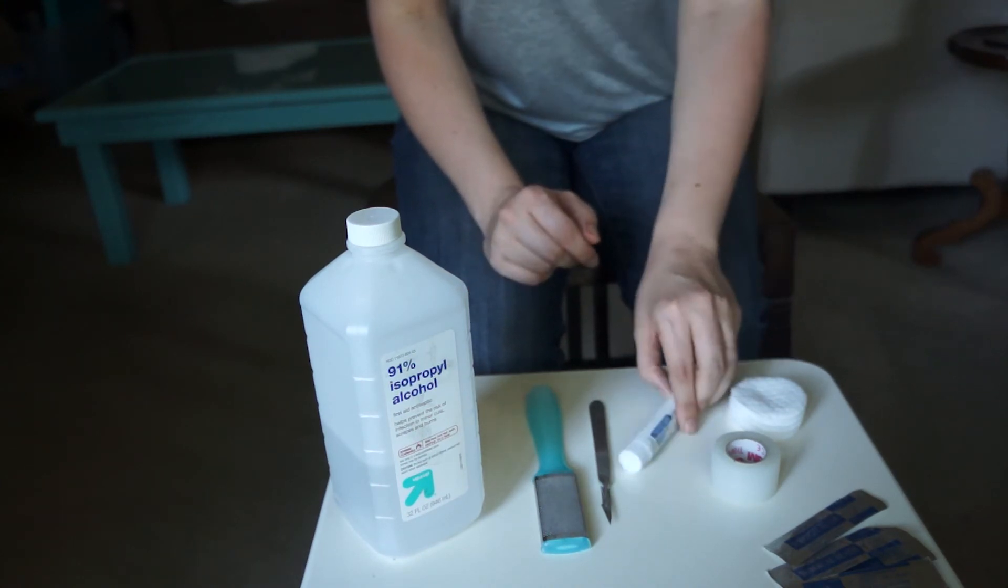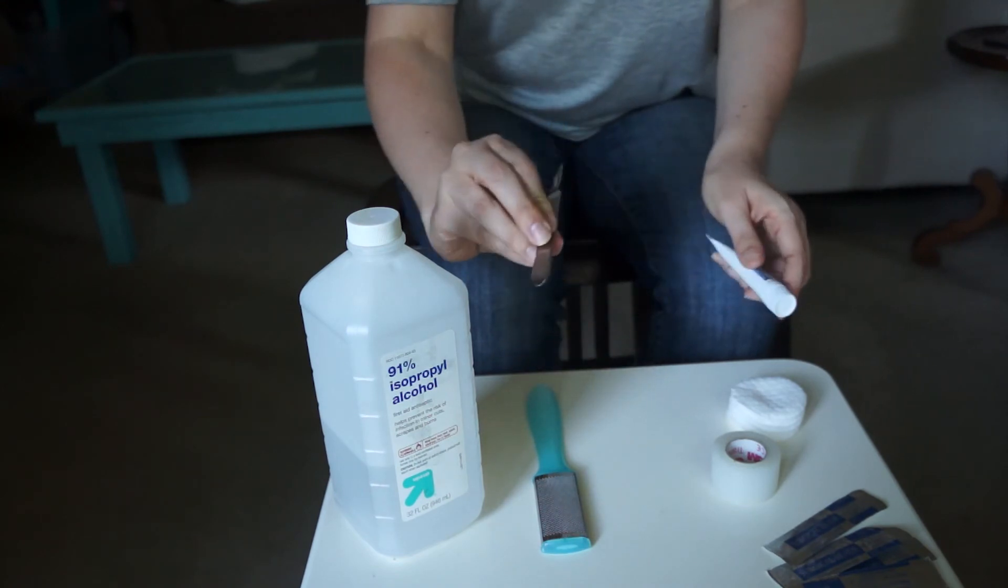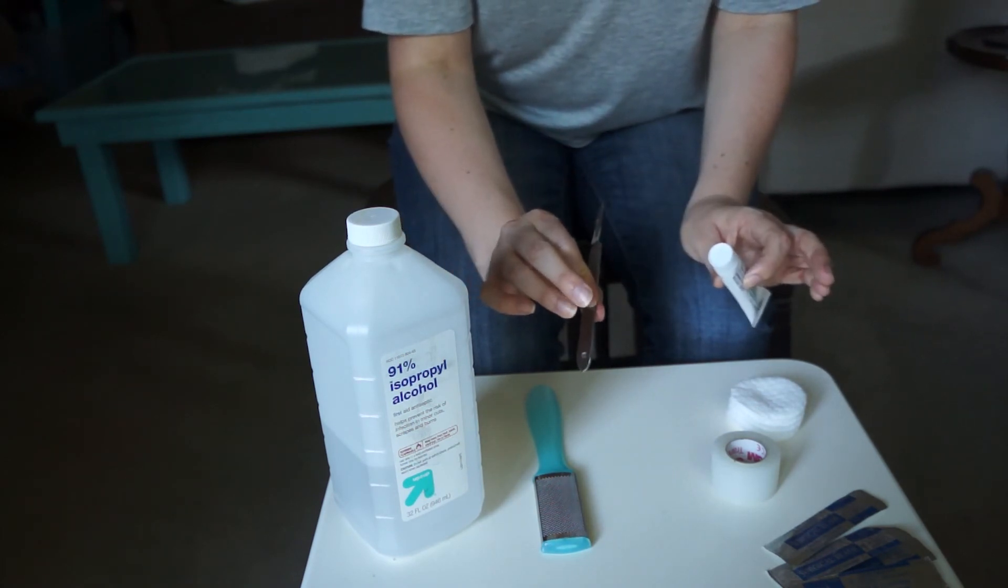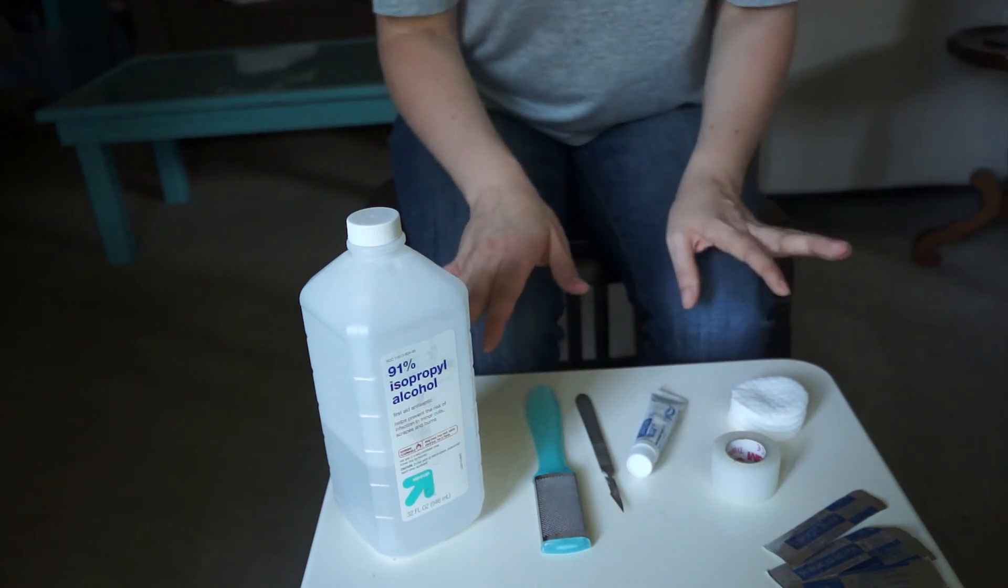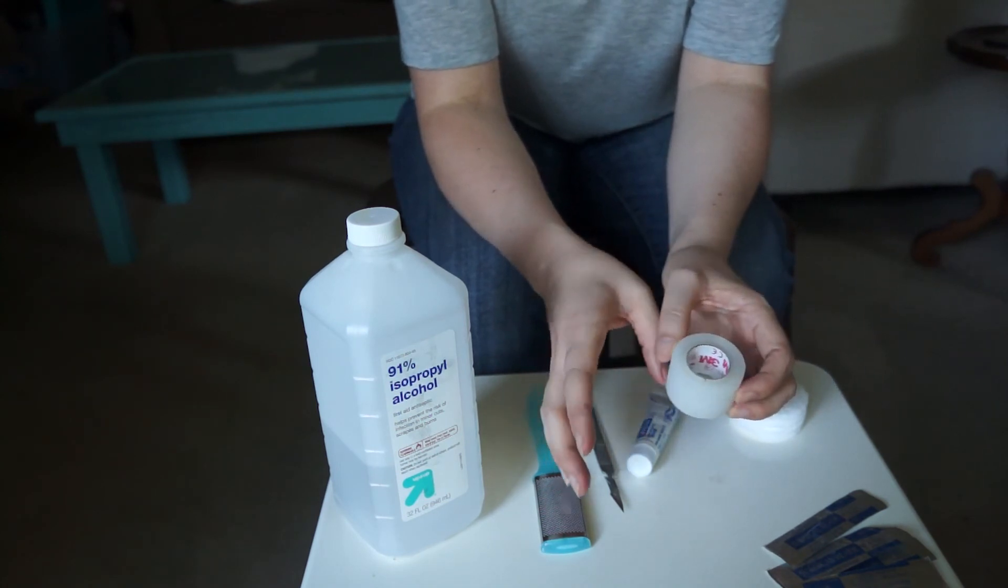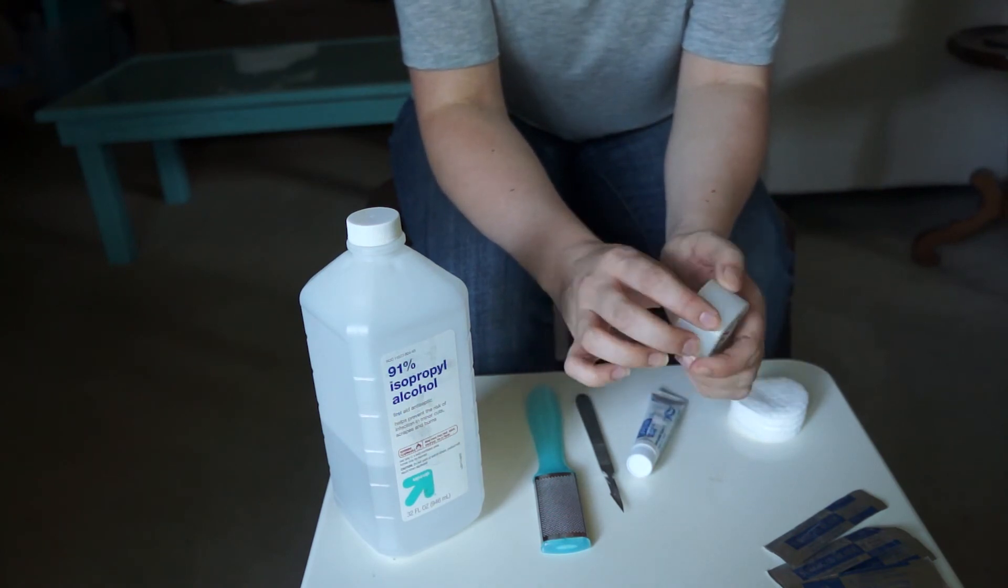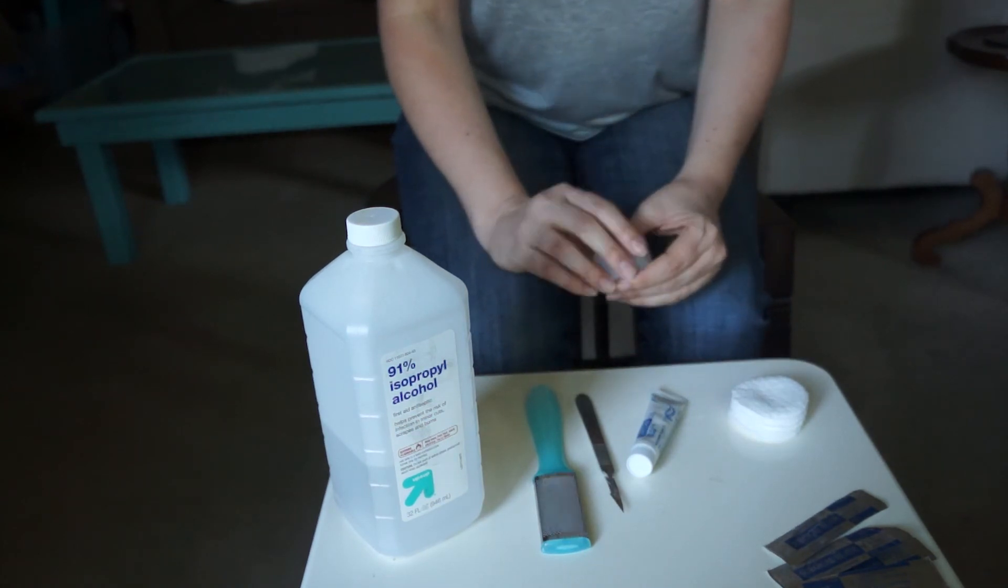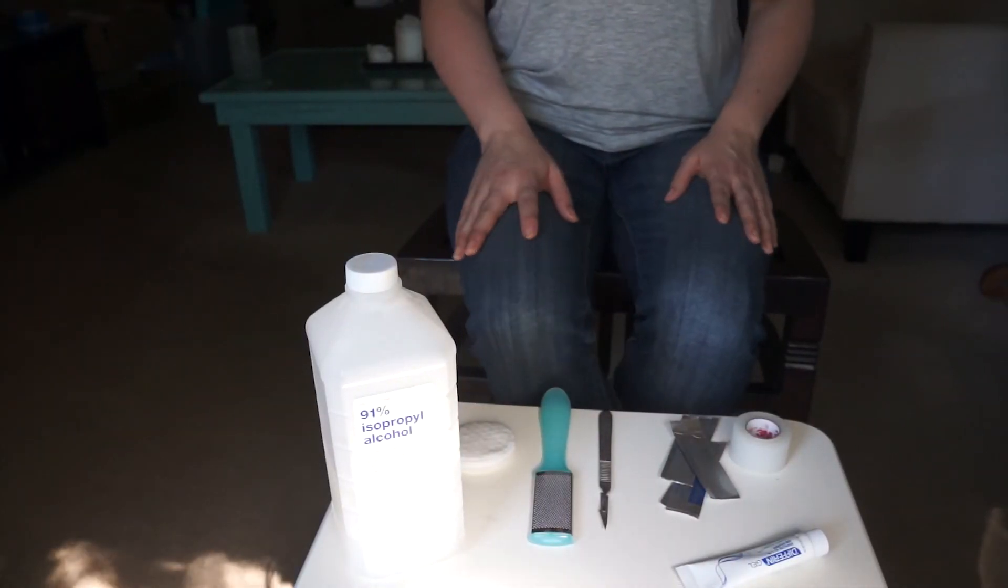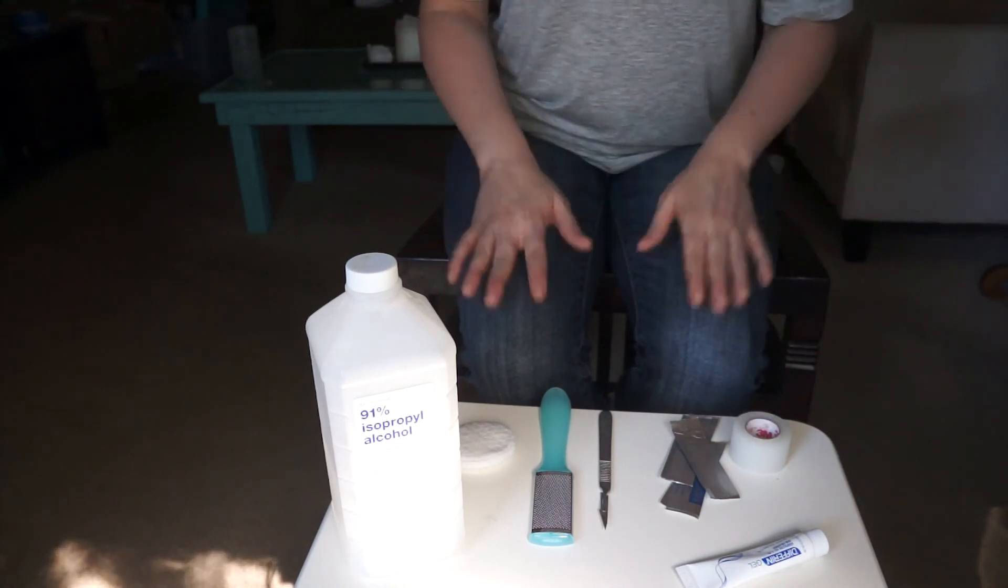Once that's done, I am ready for the adapalene gel. So I'm going to use this Differin gel. I'll just put a little bit on the tip of the scalpel and then apply it to the wart. Again, trying not to touch the wart so that I can reduce spreading. So once the gel is applied over the wart, I will then take my non-breathable surgical tape and put it over the wart itself. And there is breathable surgical tape. So I'm being careful to use the non-breathable surgical tape because the study called for occlusive bandaging.